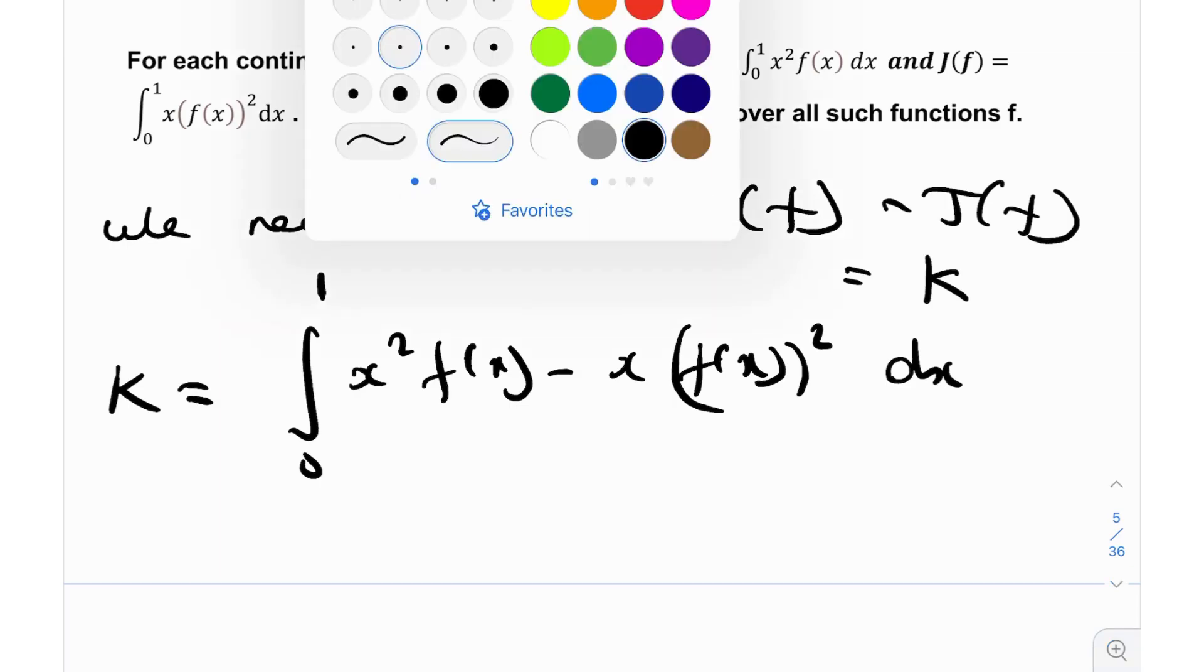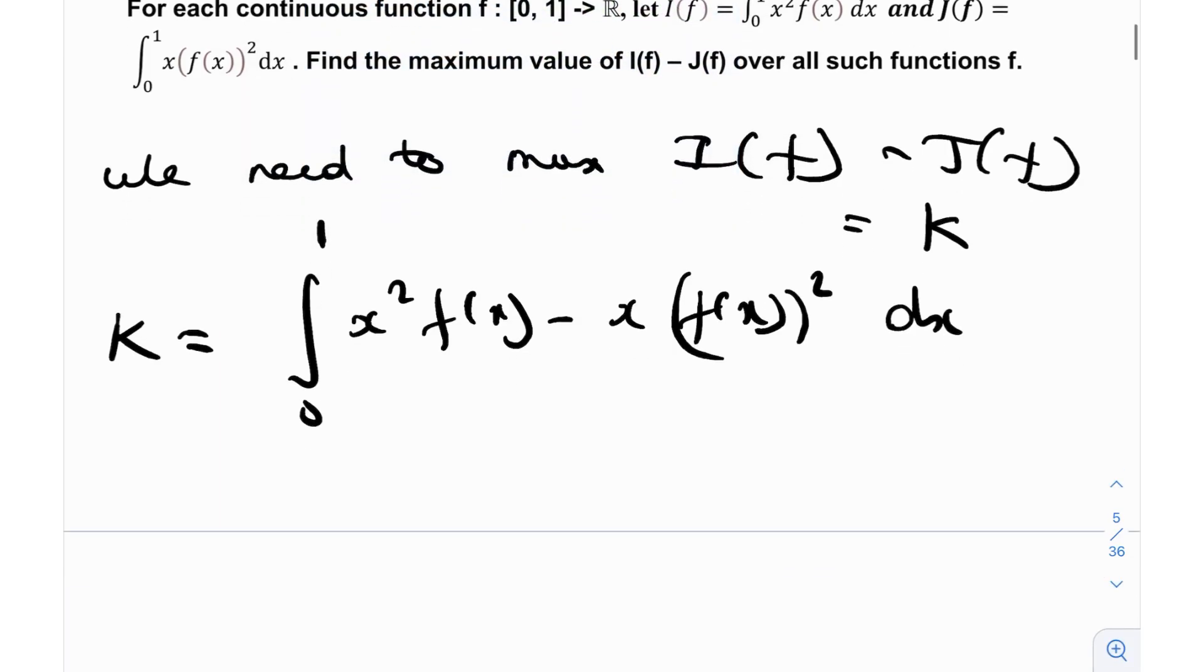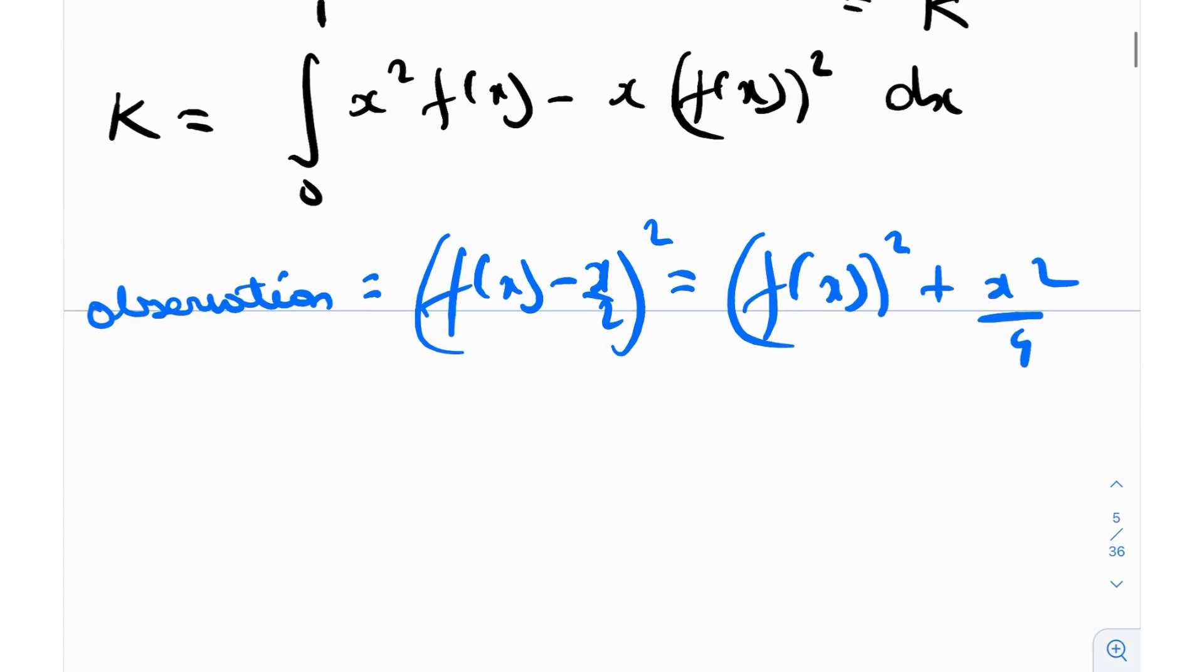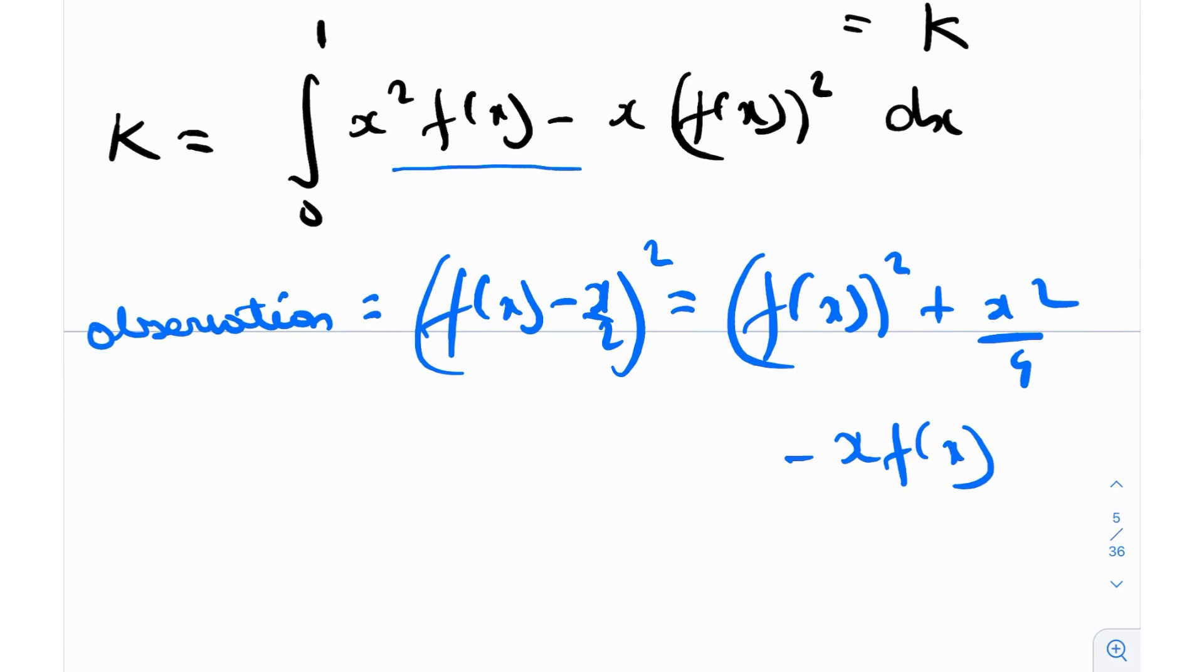Now, let me make some observation over here. The observation is that [f(x) - x/2]² is nothing but f(x)² + x²/4 - x·f(x). If you actually see, this is quite similar to what we have over here, with the exception that we need an x over here.